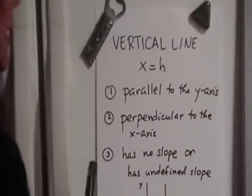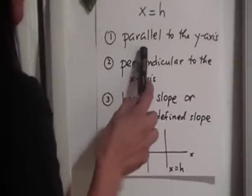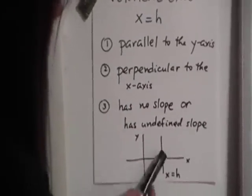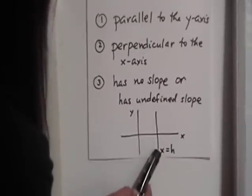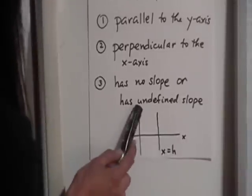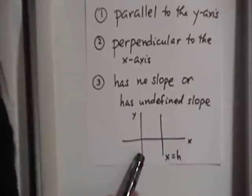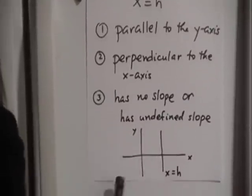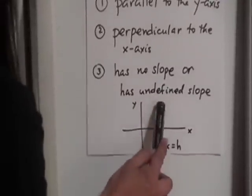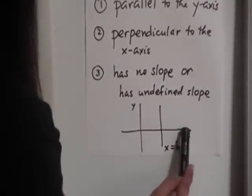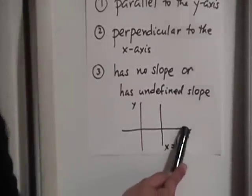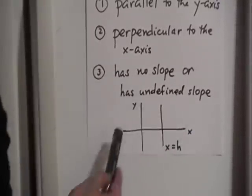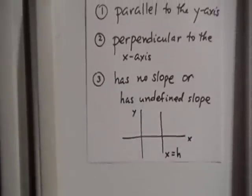Some characteristics of a vertical line are: a vertical line is parallel to the y-axis. Here I have a little example of a vertical line x equals h, and notice that it is parallel to the y-axis. Another characteristic is that it's perpendicular to the x-axis, so notice that this vertical line x equals h is perpendicular to the x-axis. We can also say that a vertical line has no slope, or that it has undefined slope.